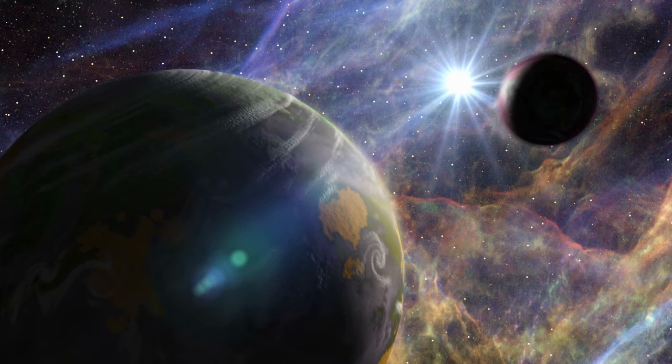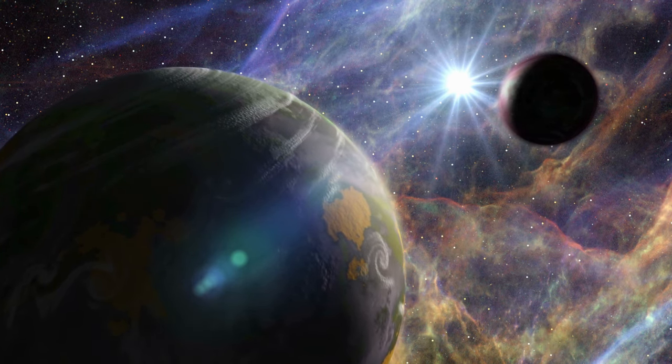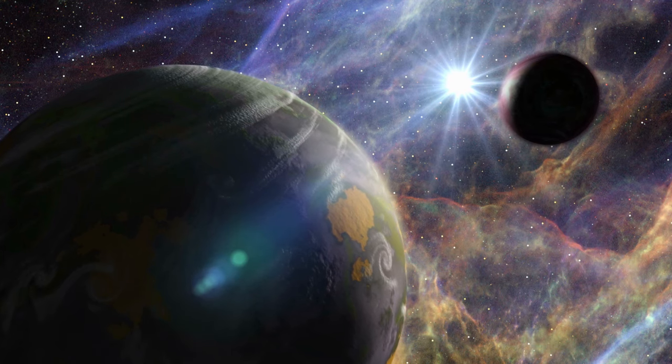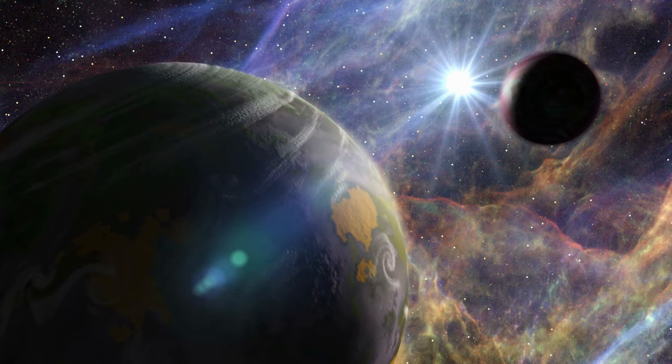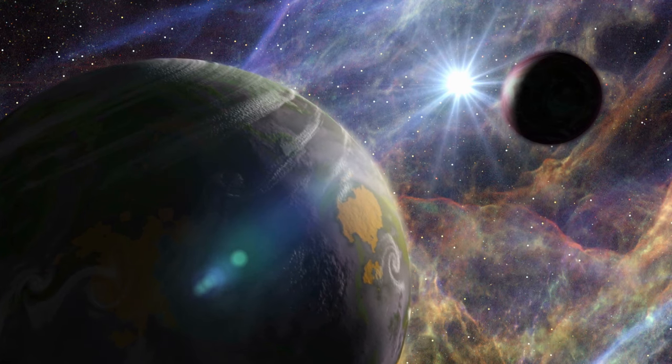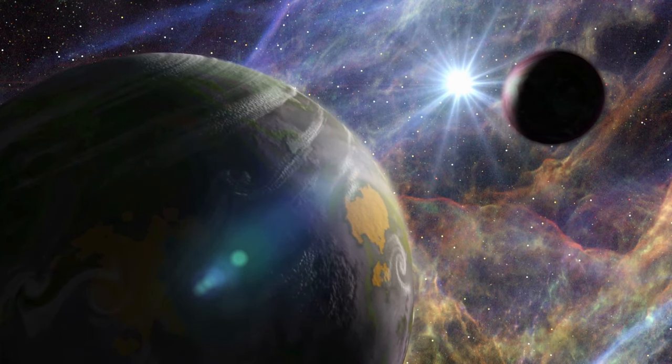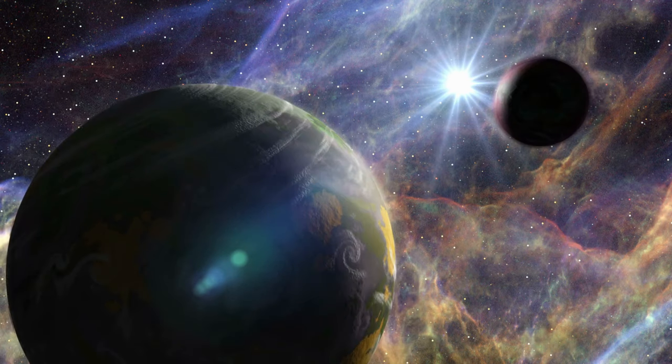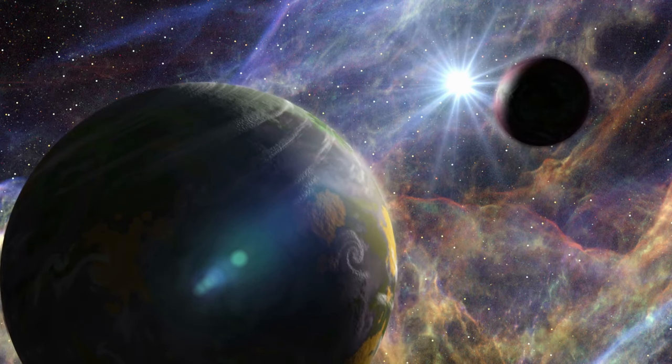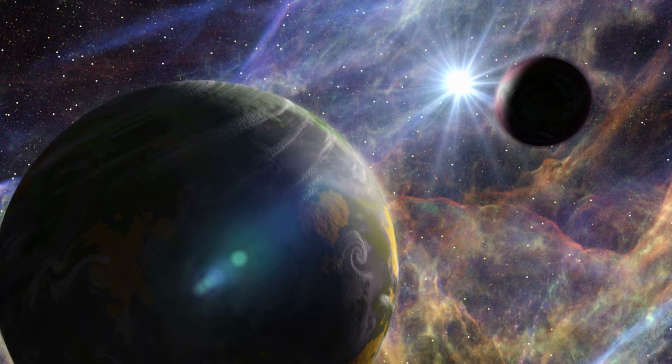International Space Station, humanity's orbital outpost. The International Space Station, ISS, orbits the Earth at a breathtaking speed of about 28,000 kilometers per hour, 17,500 miles per hour. It serves as a testament to international collaboration in space exploration.